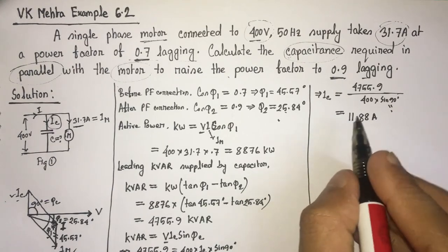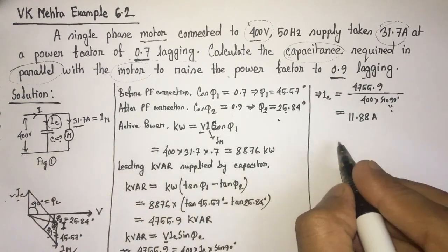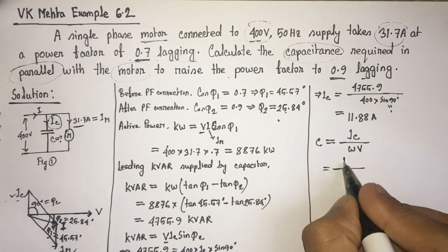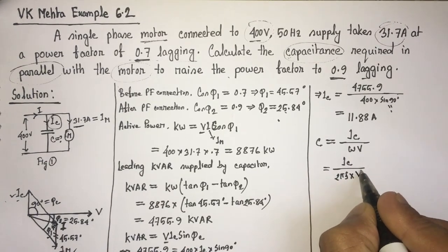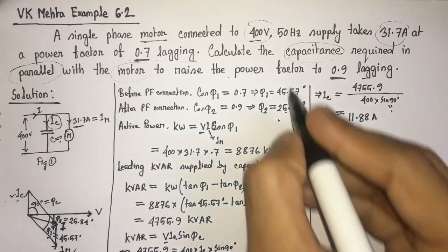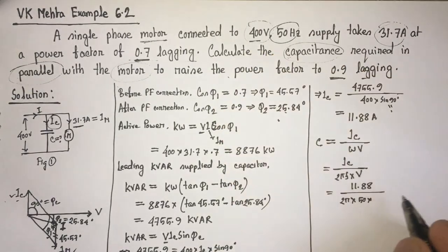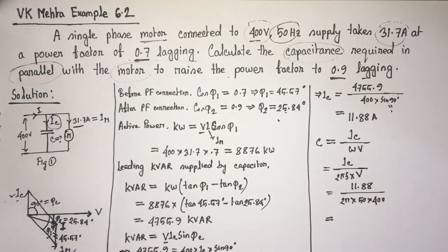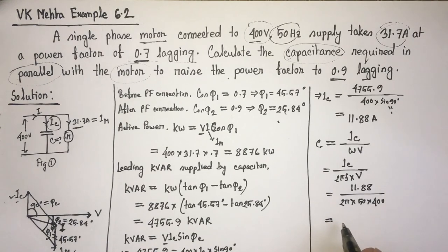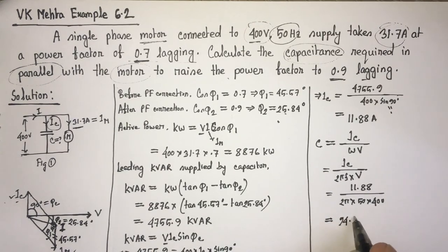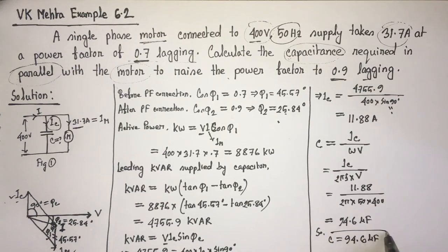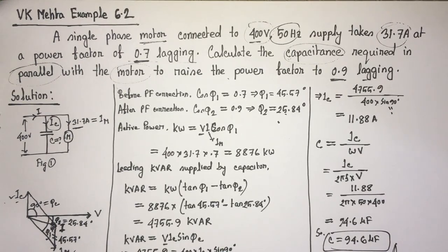Now we know that the value of capacitance C can be determined using C = I_C / (ω × V), where ω = 2π × f = 2π × 50 Hz and V = 400 volts. With I_C = 11.88 amperes, the value of C becomes 94.6 microfarads. This is the answer for the power factor correction problem.